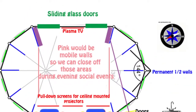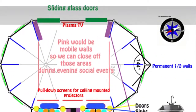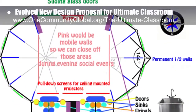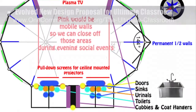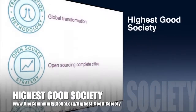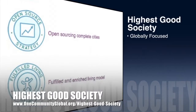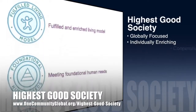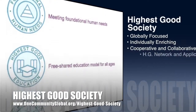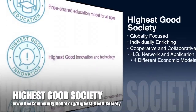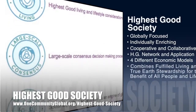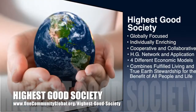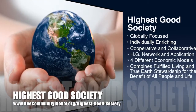This week the core team continued working on the structural redesign of the ultimate classroom, evolving last week's design to add more space, bathrooms, cubby storage, sinks, and other details. One Community's approach to highest good society is globally focused, individually enriching, cooperative and collaborative, includes a highest good network and application, four different economic models, and combines fulfilled living and true earth stewardship for the benefit of all people and all life on this planet.